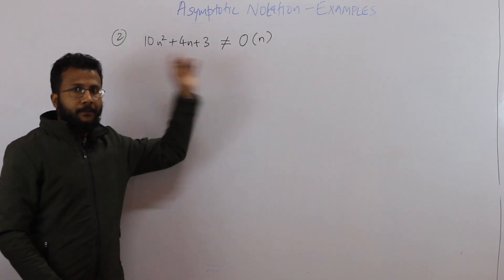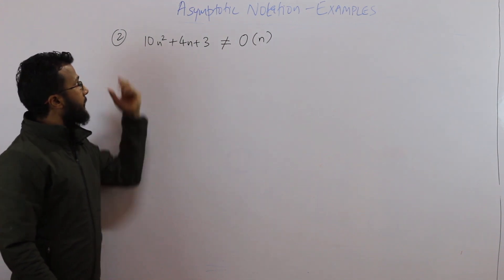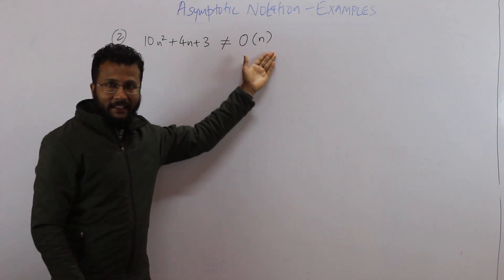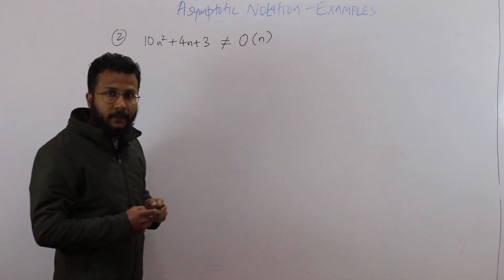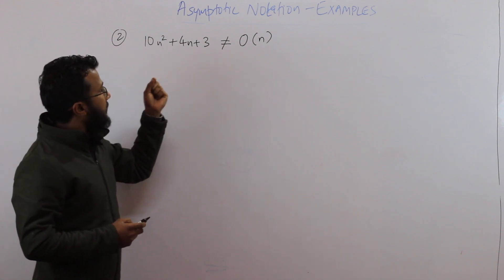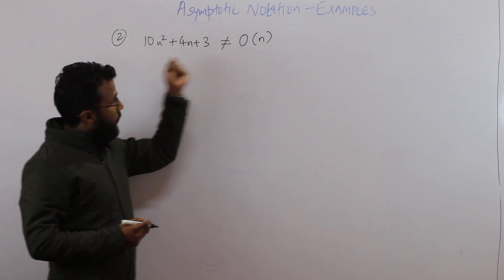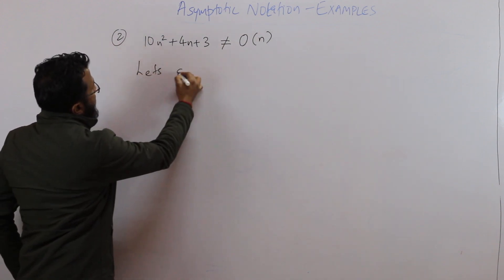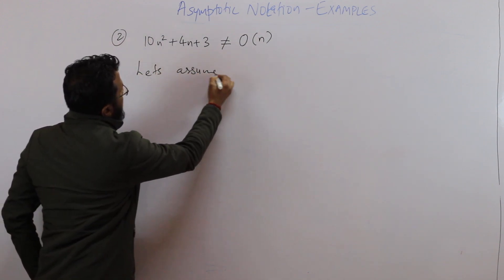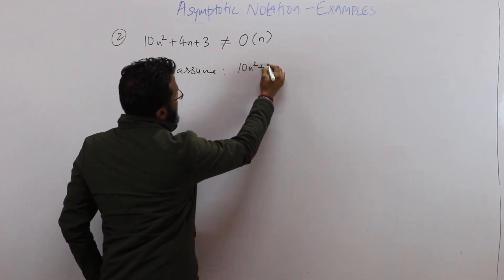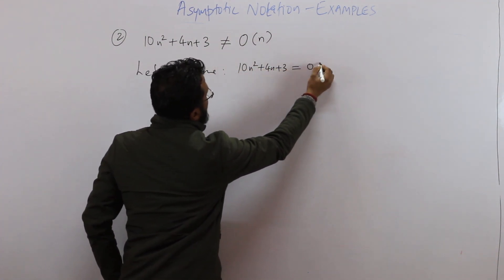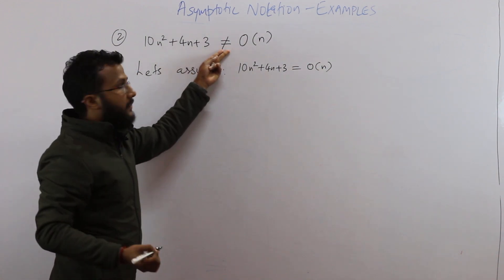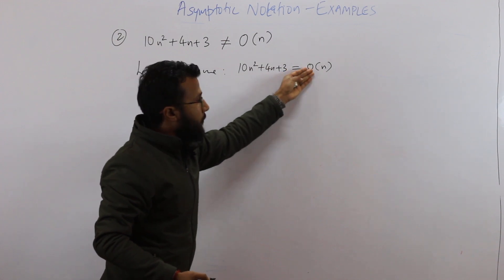This is our second example. We are supposed to prove that 10n² + 4n + 3 is NOT equal to big O of n. Remember, this is a not-equals-to statement. Whenever you get a question like this, let's try to prove it by contradiction. So let's assume that 10n² + 4n + 3 equals big O of n.